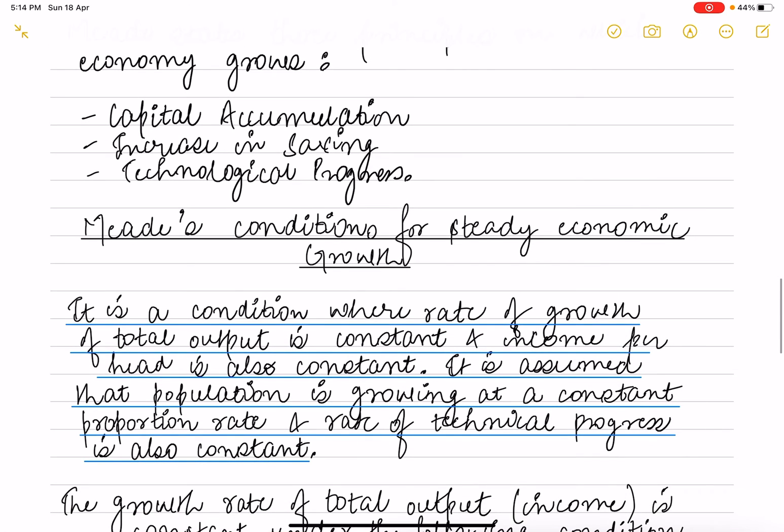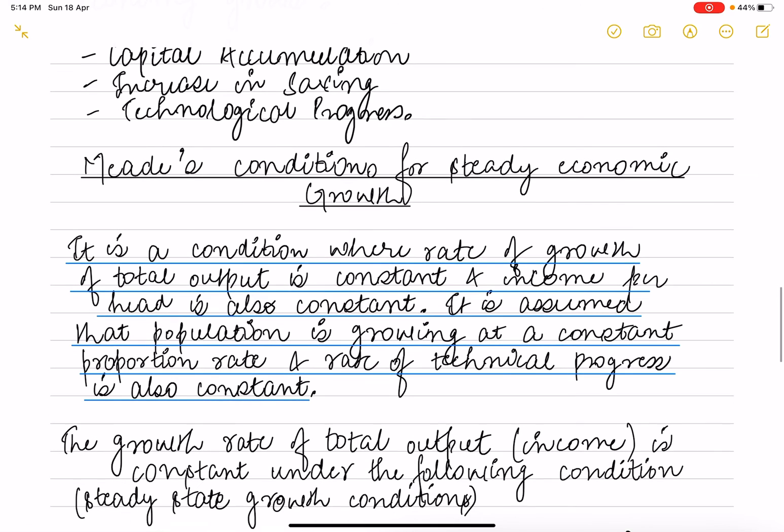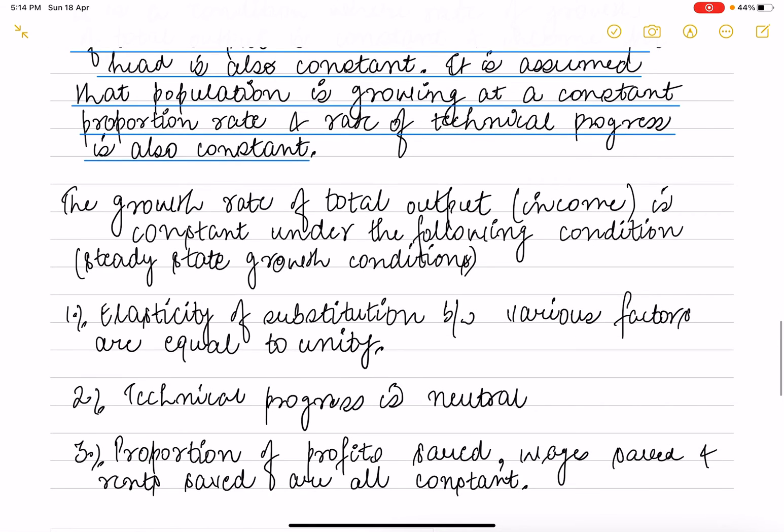The Meade condition for steady growth: it is a condition where the rate of growth of total output is constant, so income per head is also constant. It is assumed that population grows at a constant proportional rate and the rate of technological progress is also constant. Growth of total output is constant under following conditions.